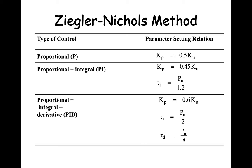Here are the equations for finding Kp, tau i, and tau d knowing Ku and Pu. You can see from the equations that Kp is some fraction of Ku, and tau i and tau d are related to the ultimate period Pu. These are simple calculations.